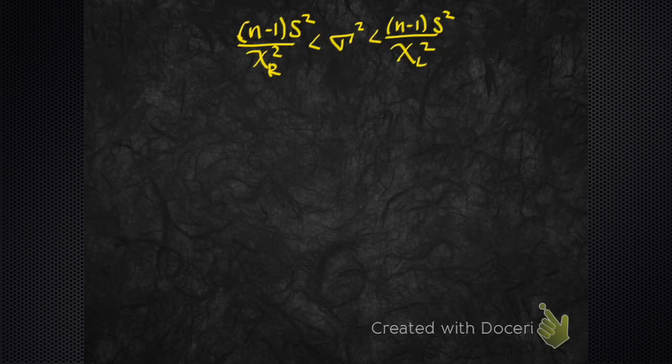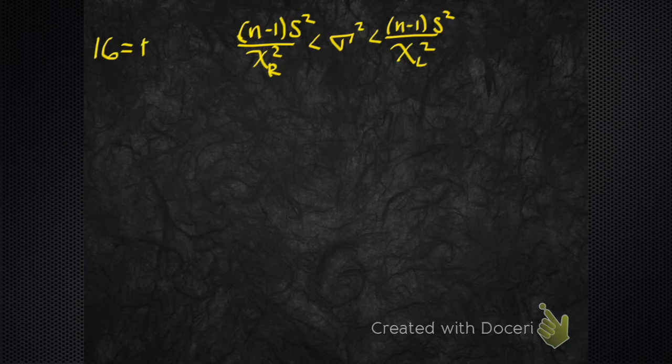So we're trying to make a confidence interval for the variance. We need some stuff. What do you want our sample size to be? 14, 16? Okay, I should have wrote my n on the left.